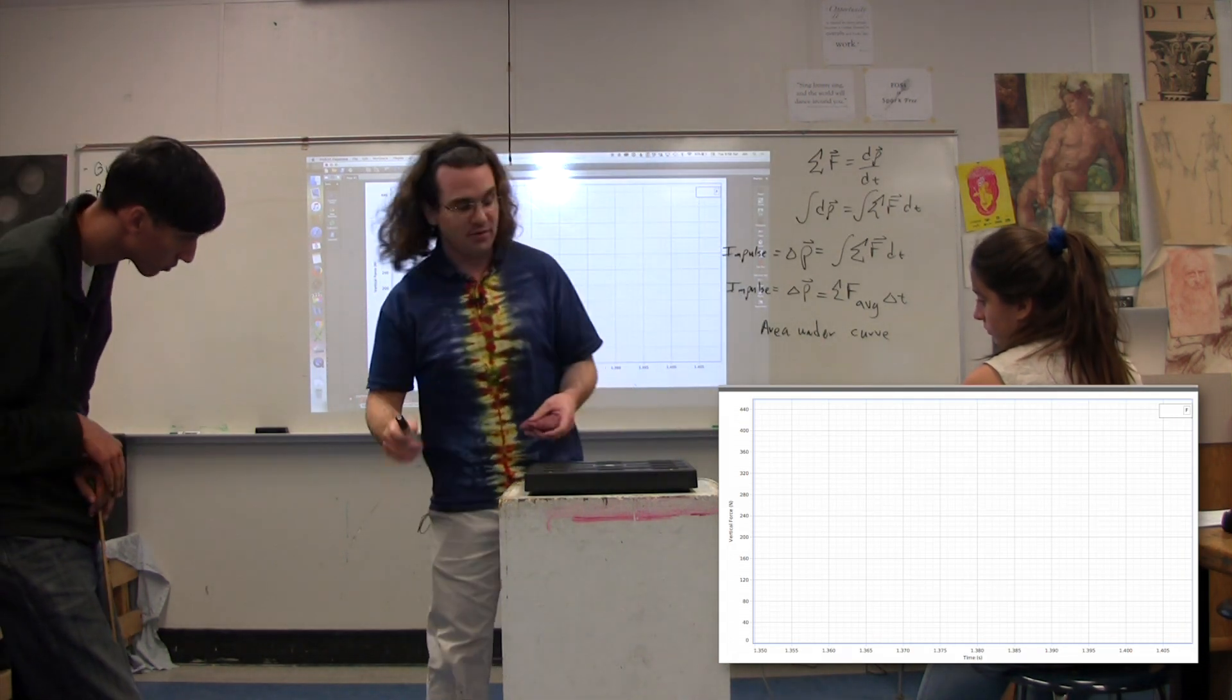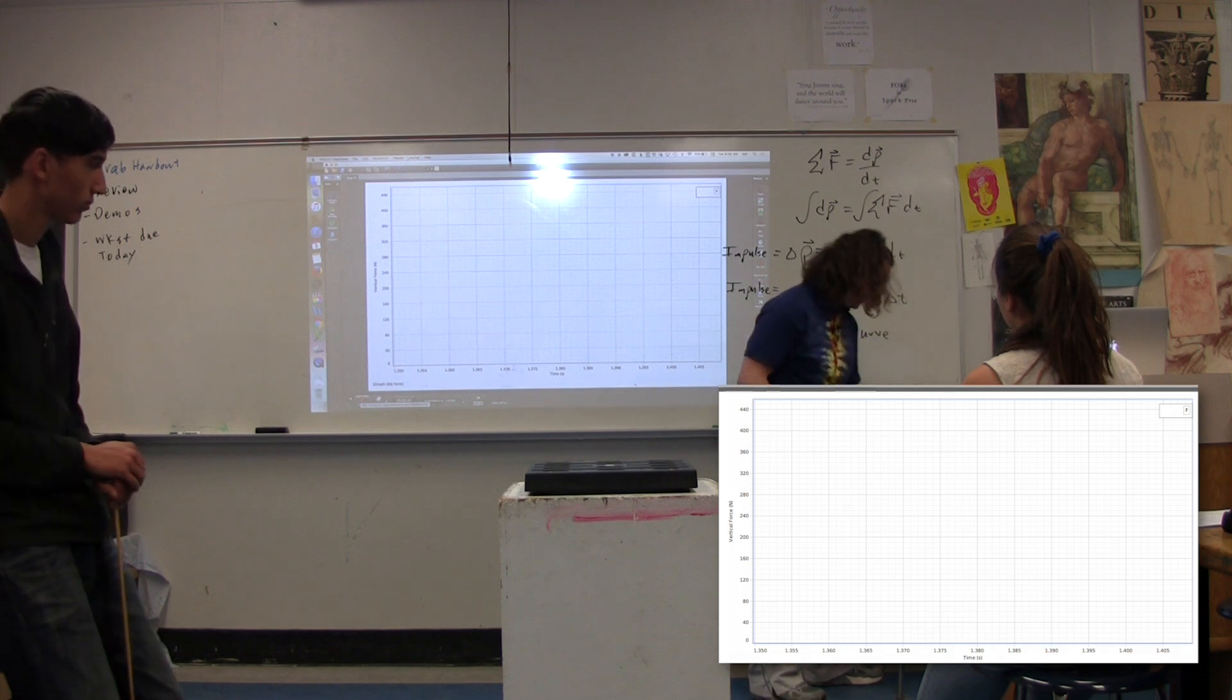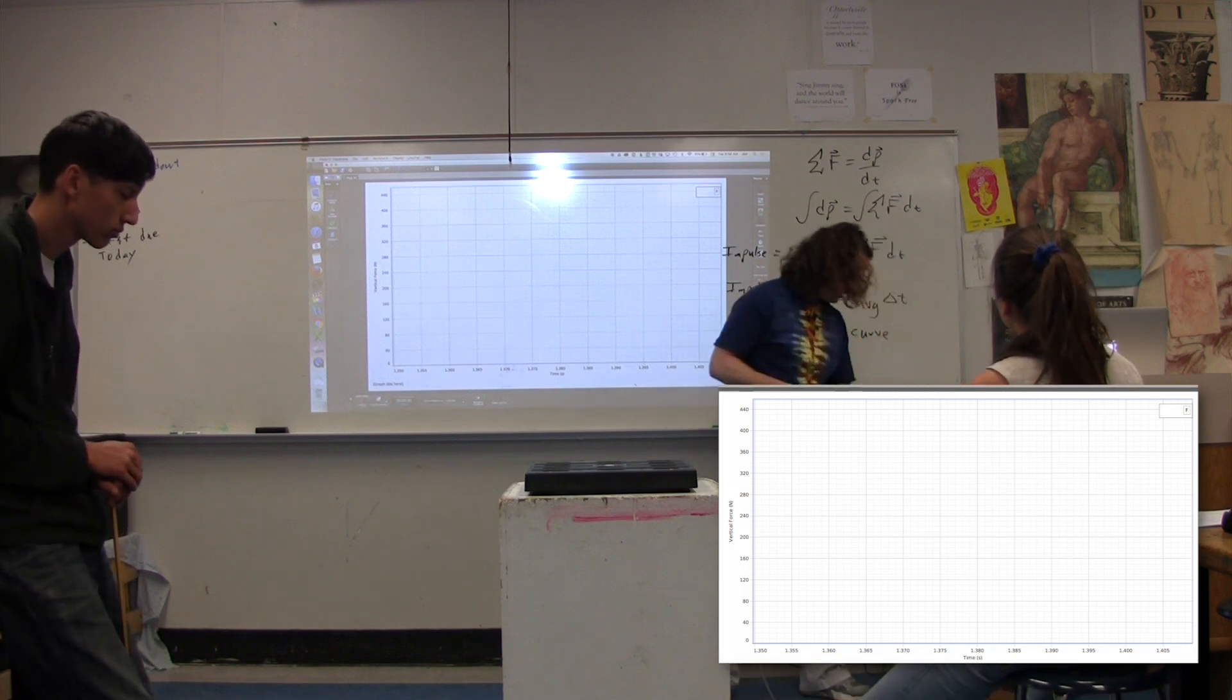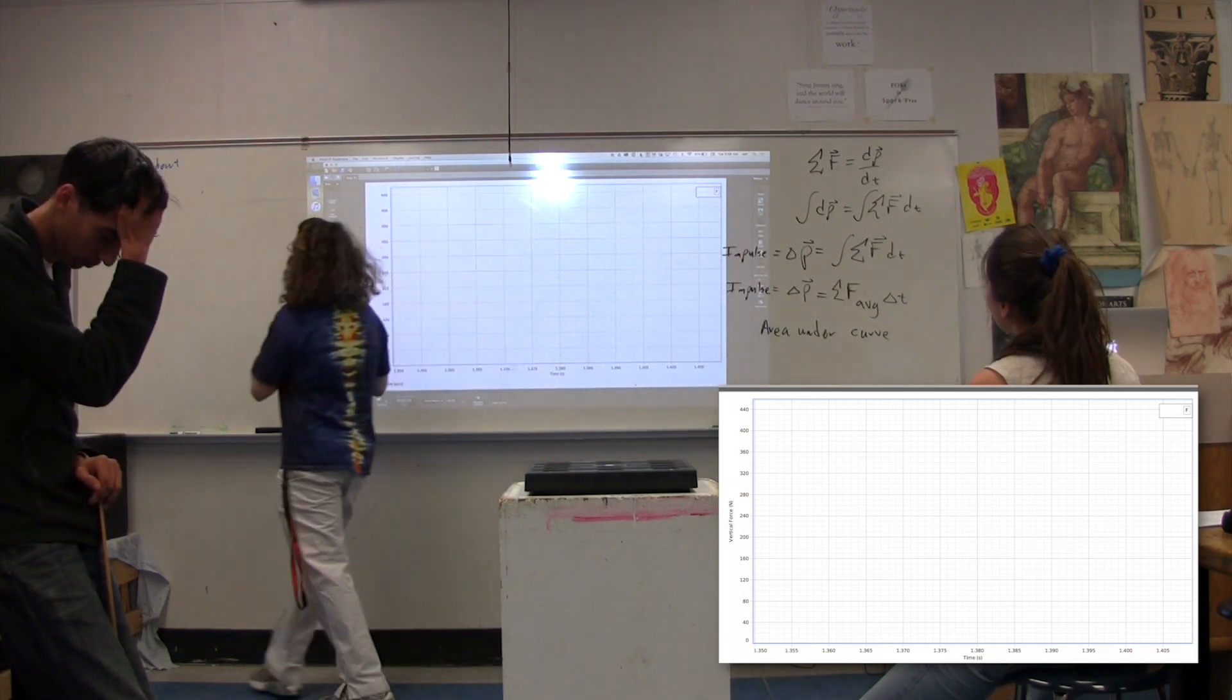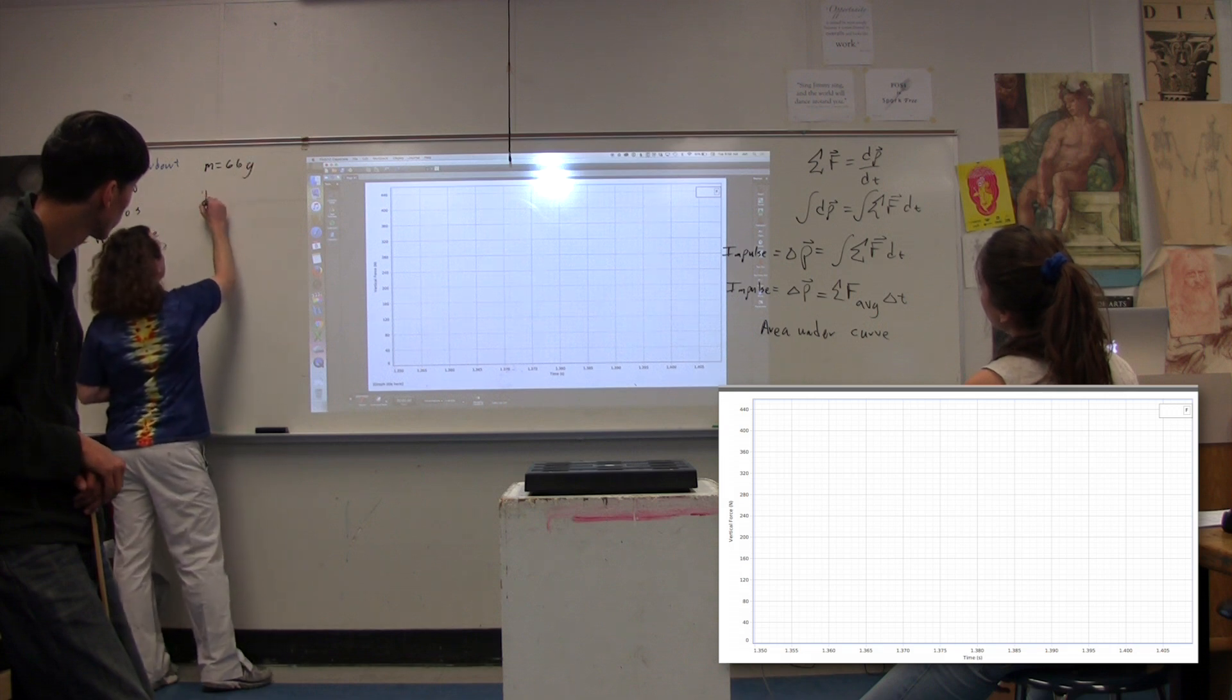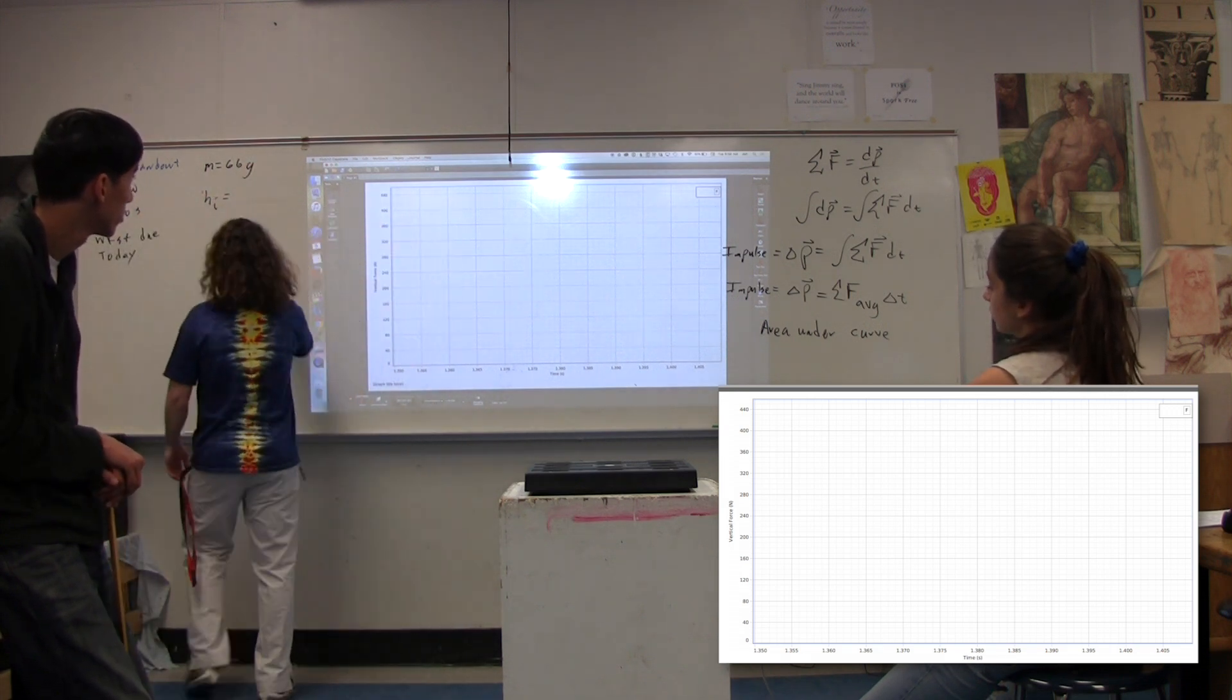We're going to drop this object from the same height, and this object has a mass of 66 grams. What was the height initial class? 70.0 centimeters.